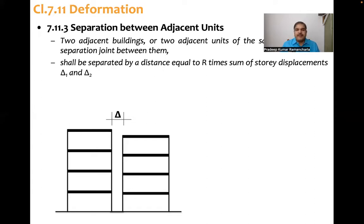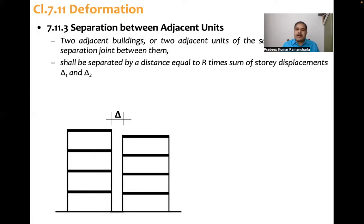Delta is the separation between them shall be separated by a distance equal to R times sum of story displacement delta 1 and delta 2. So delta 1 is the displacement at that story level for the first building and delta 2 is the displacement of second building. So what code proposes is that delta should be greater than R times delta 1 plus delta 2.